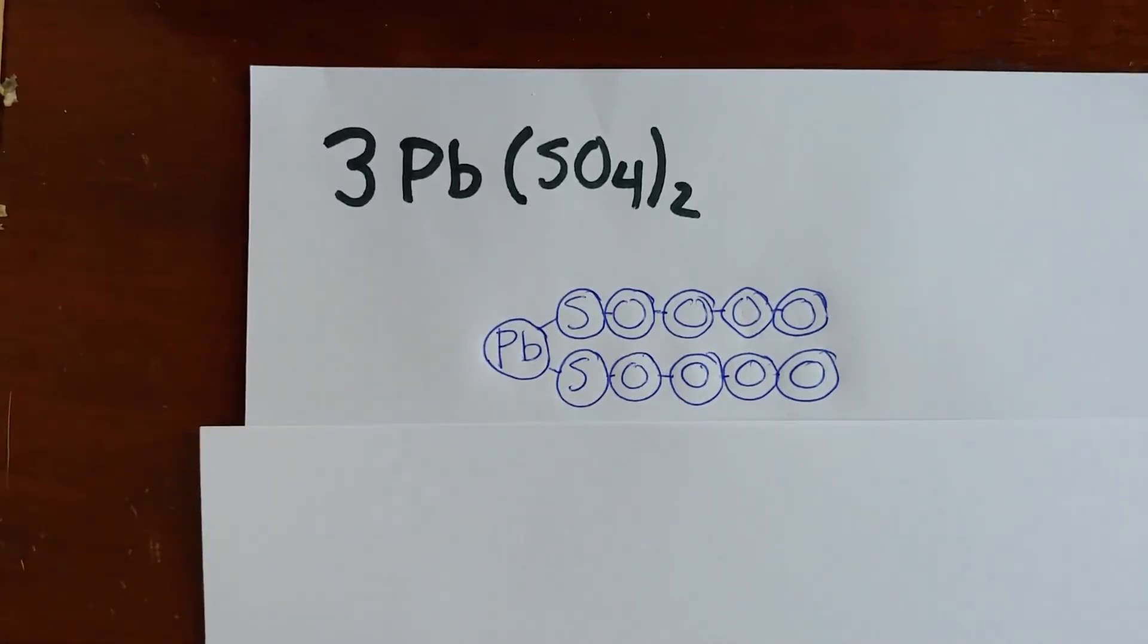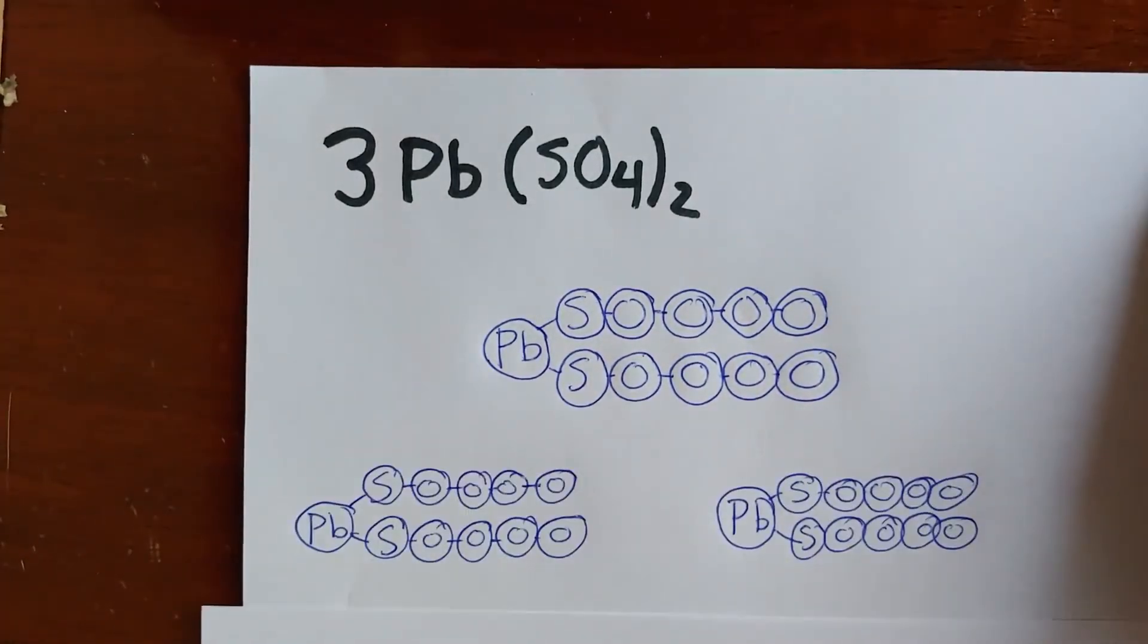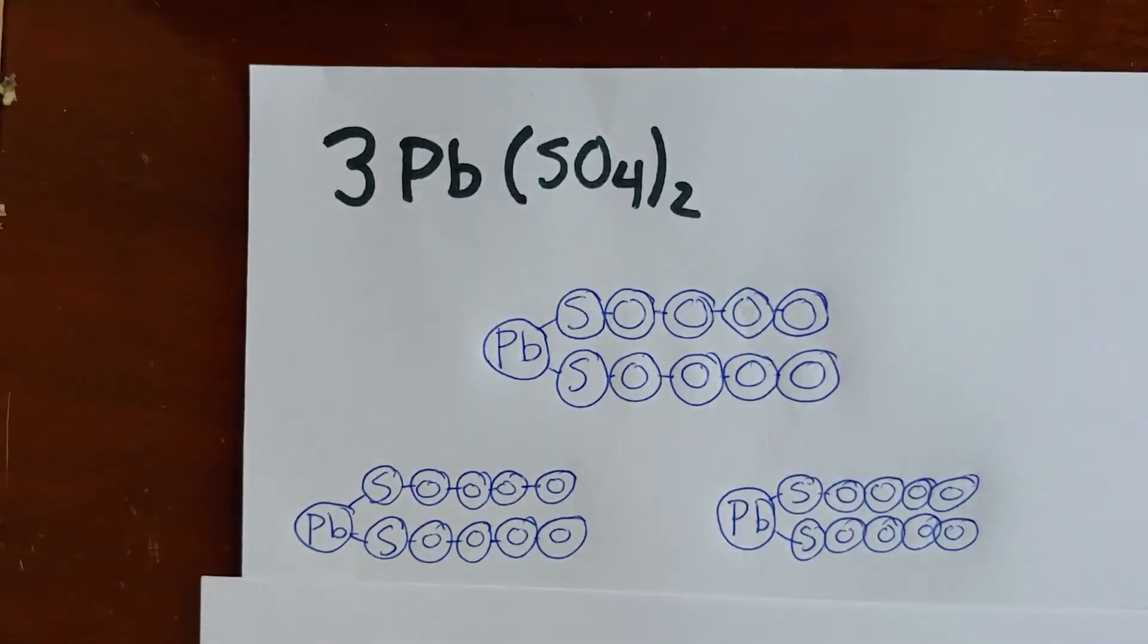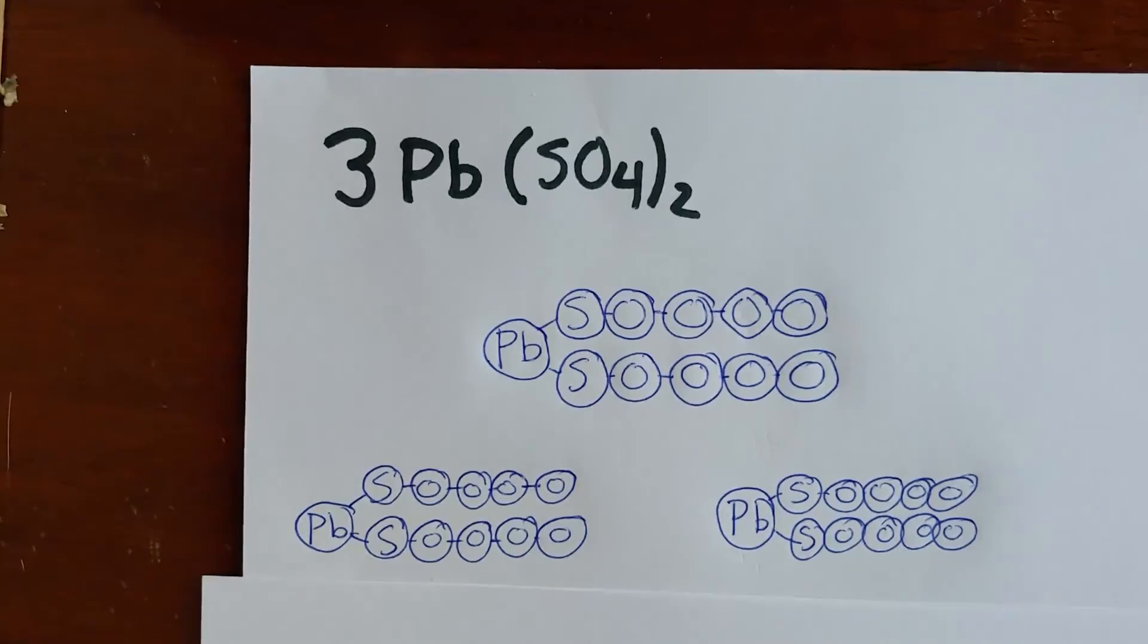So that means we've got to take that same molecule and copy the exact same thing until we have a total of three copies. And that's how it looks with polyatomic compounds.